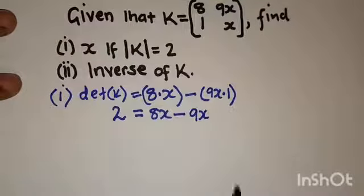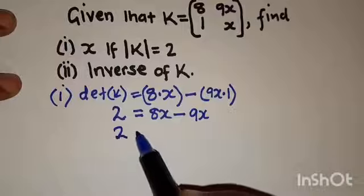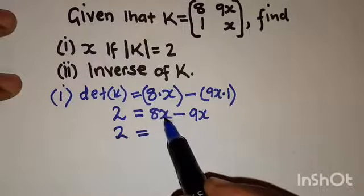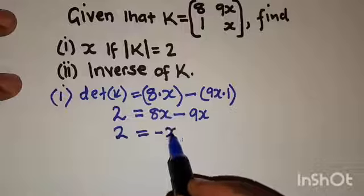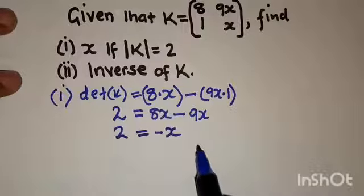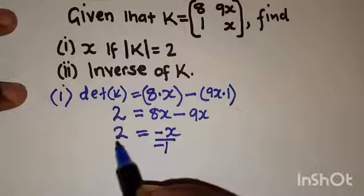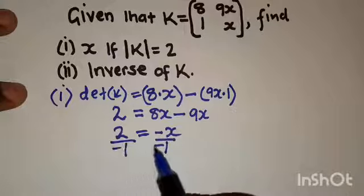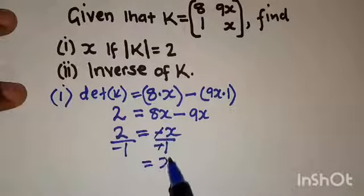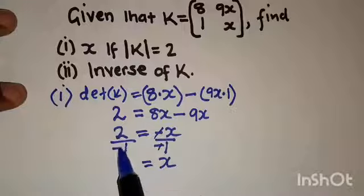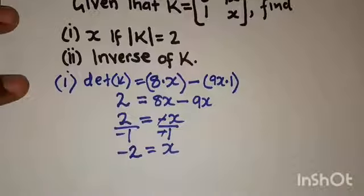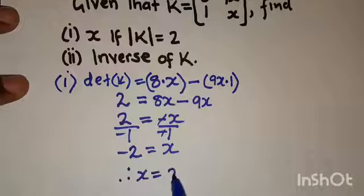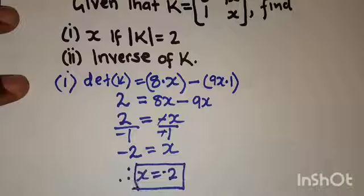So we have 2 equals 8X minus 9X, which is negative X. To find the value of X, you divide both sides by negative 1. This gives positive X on one side, and 2 divided by negative 1 is negative 2. Therefore, X is equal to negative 2.